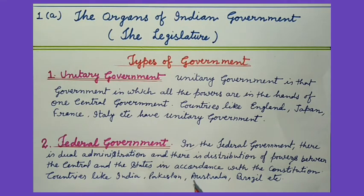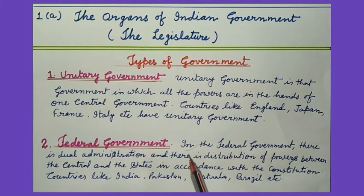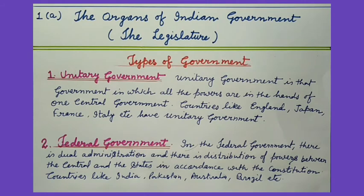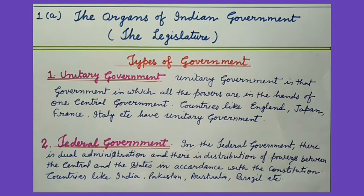India has 28 states and nine union territories. Countries like India, Pakistan, Australia, Brazil, Canada, Malaysia, Nigeria, and South Africa have federal governments.